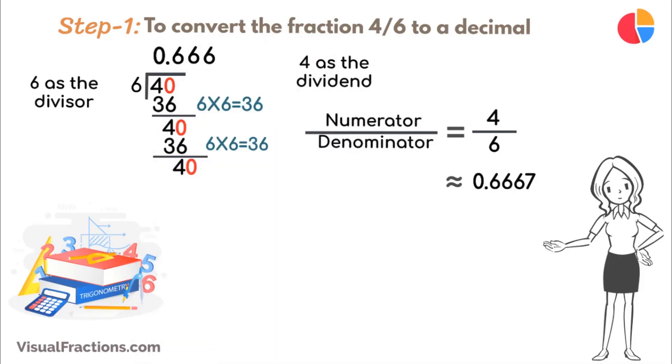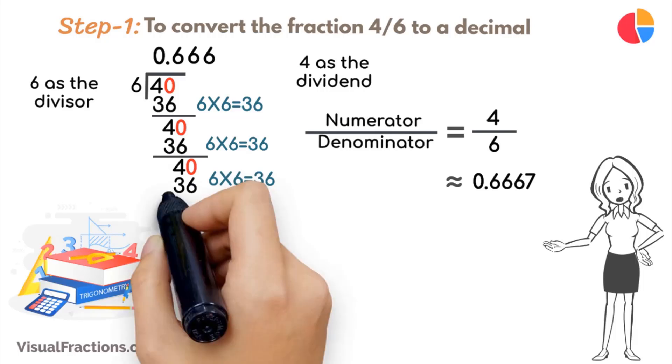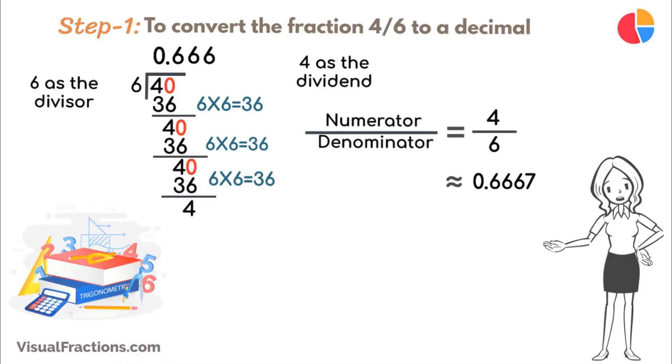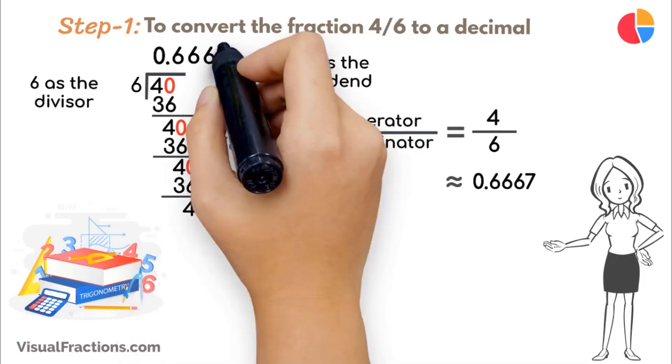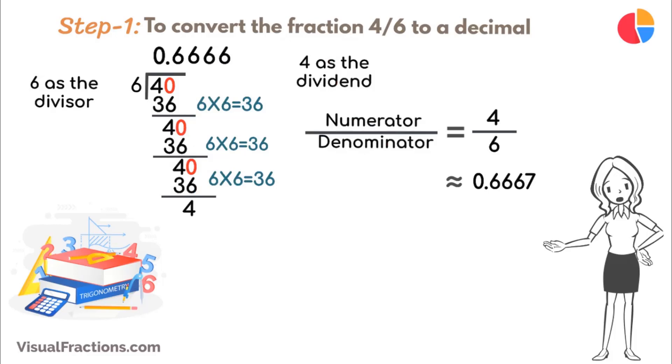This pattern continues with the remainder consistently returning to 4, and the same calculation repeating. Each time, 6 goes into 4 six times, adding more 6s in the quotient, establishing a repeating decimal sequence. Thus, the decimal extends as 0.6667.